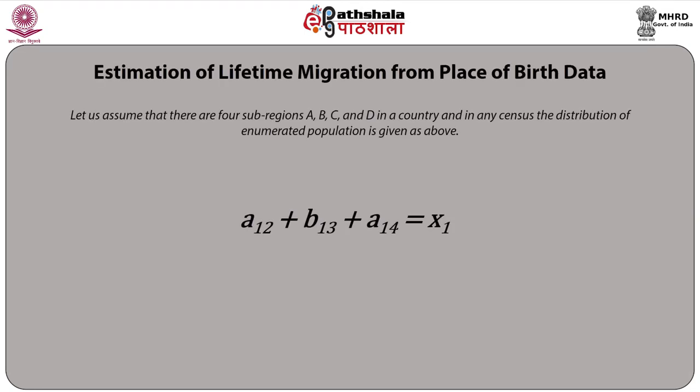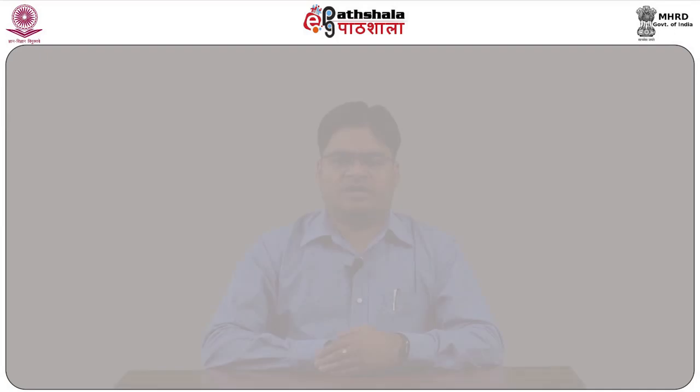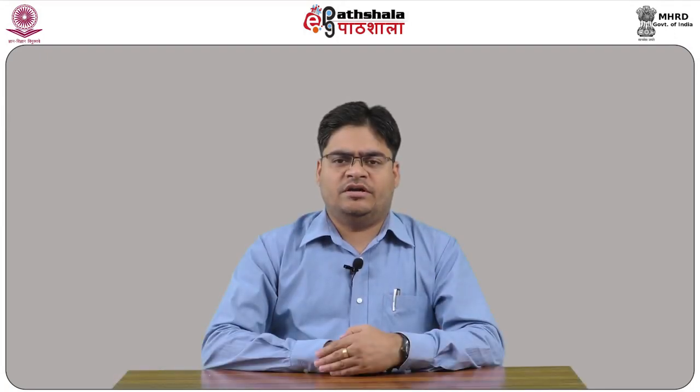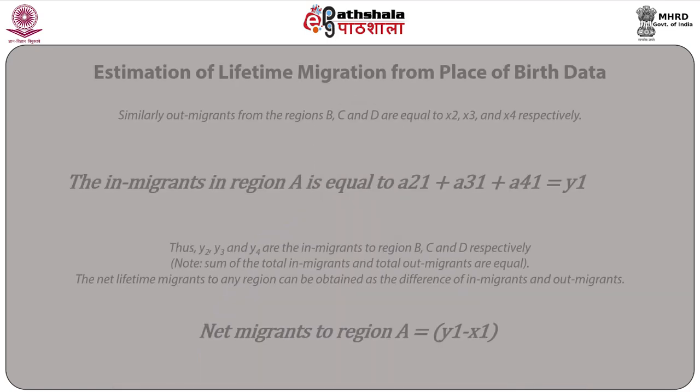Assume there are four sub-regions A, B, C and D in a country. In the classification matrix, the sum along the row values excluding the diagonal elements gives the out-migrants from the regions. The sum of entries in any column excluding diagonal elements gives the in-migrants to the region. The out-migrants from region A equal A(1,2) + A(1,3) + A(1,4) = X1.